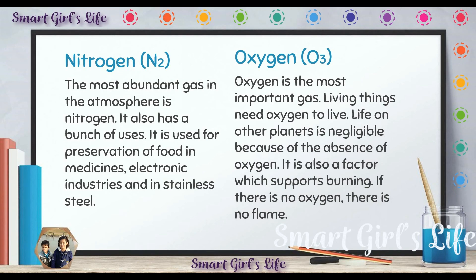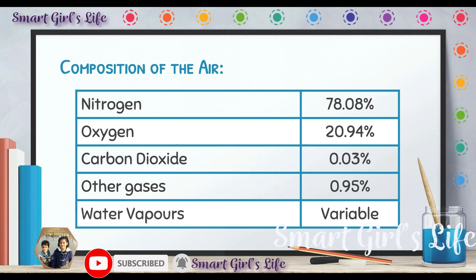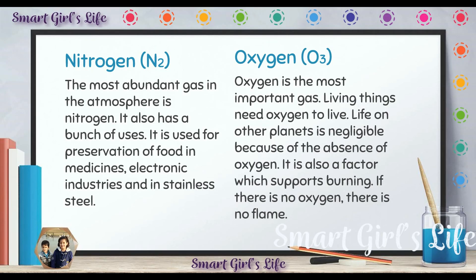Now we have the definitions of nitrogen (N2) and oxygen. We should know that nitrogen and oxygen are very important for us. Nitrogen is the gas that is the most present in the air. As you can see, nitrogen has the highest percentage in the air — it has 78.08%. So you can say that it is the most abundant gas.